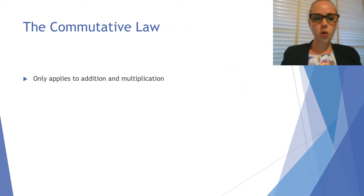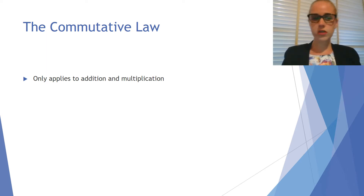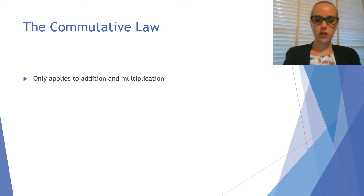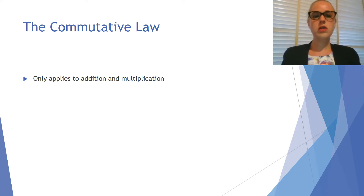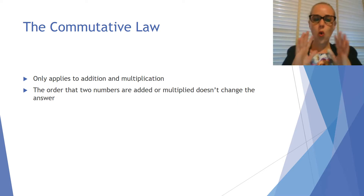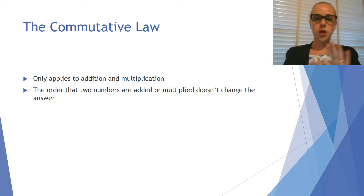The commutative law only applies to addition and multiplication, so you can't use it for subtraction, division, or any other operation. What the commutative law says is that the order that two numbers are added or multiplied doesn't change the answer.